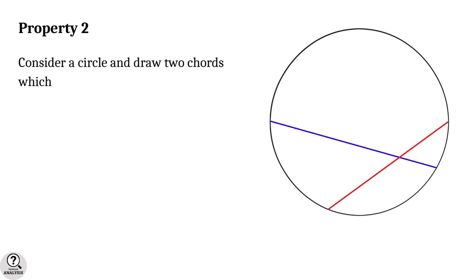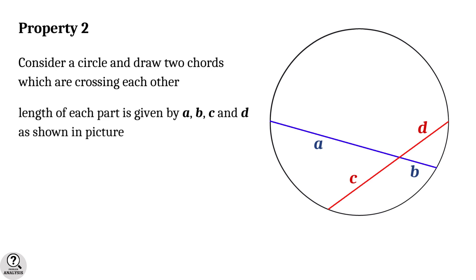Consider a circle and draw two chords which are crossing each other. Length of each section of them are given as a, b, c, and d as shown in the picture. Then the fact is that a times b equals c times d. That means the product of sections of both chords are equal.